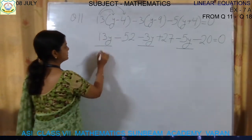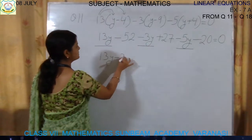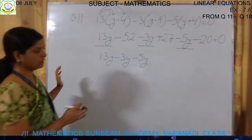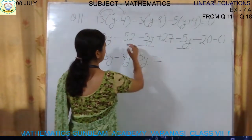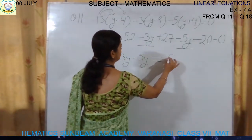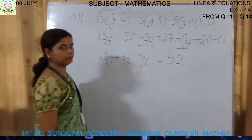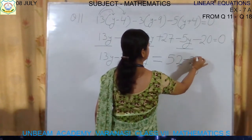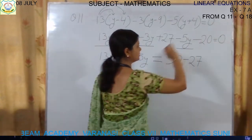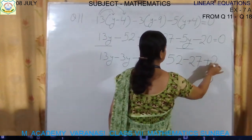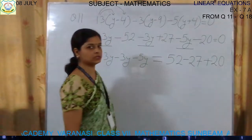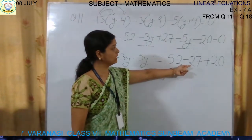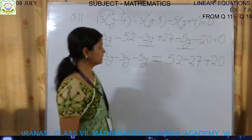So now let's write down 13y minus 3y minus 5y — keep all the variable terms on one side. Then equal to the other side. Minus 52 when shifted to that side becomes plus 52. Plus 27 when shifted becomes minus 27. And minus 20 when transposed becomes plus 20. Each sign gets changed: minus becomes plus, and plus becomes minus.